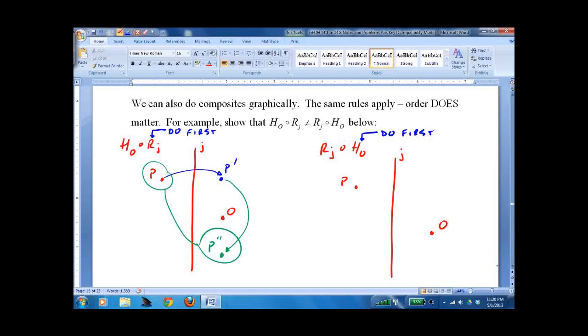I don't even know if I can fit this on the screen. So I'll go as close as I can. Half-turn about o goes all the way out here. That would be p prime. And then reflection across j goes all the way over here. That would be p double prime. So we start here and we end up over here. And as you can see, order matters. That's really the only purpose of doing this. That and to show you the process. Do the closest one first. The one on the right first.